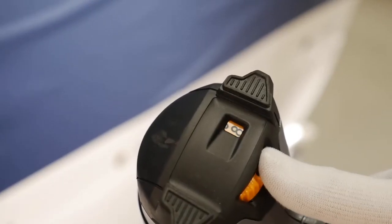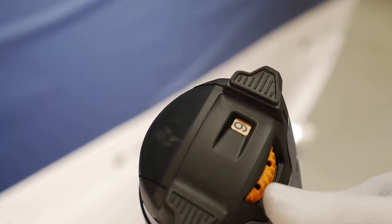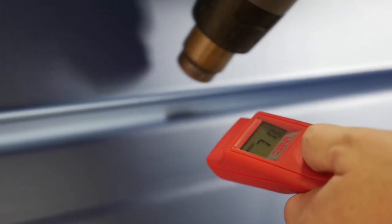When the film has been checked, start post-heating of the film applied in the recess. Heat the film in the recess to a surface temperature of between 85 and 100 degrees Celsius and press the film again to the recess.